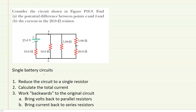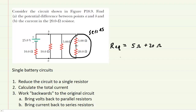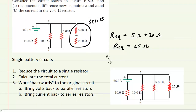For step one, reduce the circuit to a single resistor. We begin by noticing that two resistors are in series with one another. For a series combination, we determine the equivalent resistance by simply adding the resistance values. So the equivalent resistance of those two series resistors will be 5 ohms plus 20 ohms, giving us an equivalent resistance of 25 ohms. We then redraw the circuit combining those two resistors into a single 25 ohm equivalent resistor.